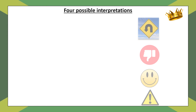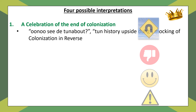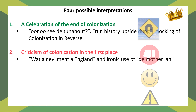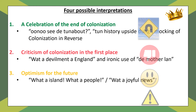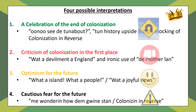So we've seen four possible interpretations: that the poem is a celebration of the end of colonisation, or a criticism of colonisation in the first place; or that it is filled with optimism for the future, or filled with cautious fear. I'm not saying only one is true — some may be more prominent than others. I wonder which interpretation you think dominates this poem, and it might be the one you choose to write about in an exam.